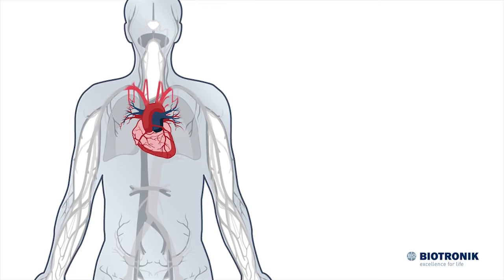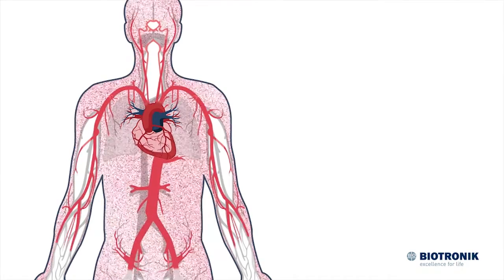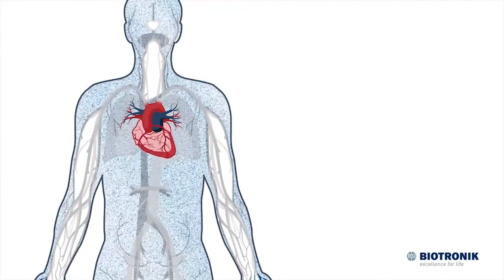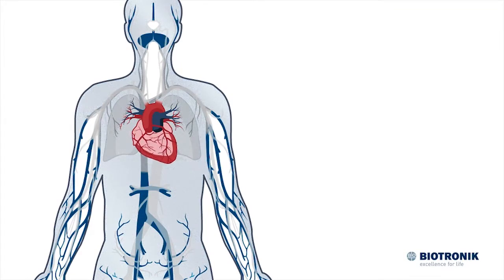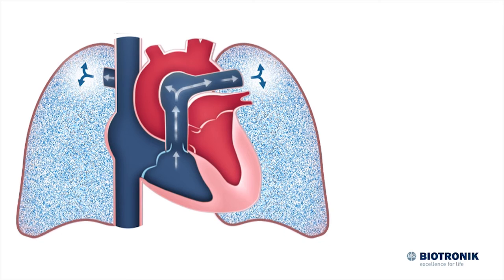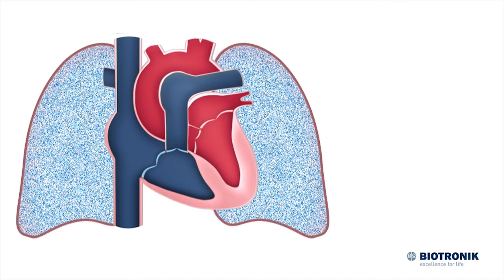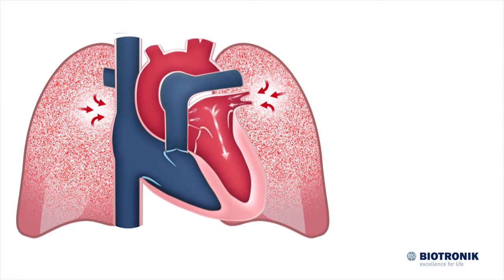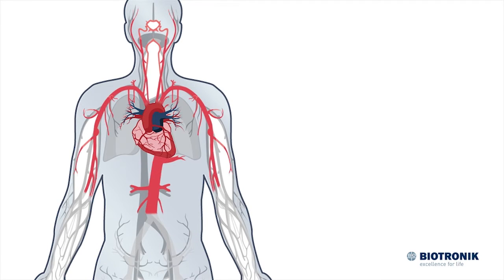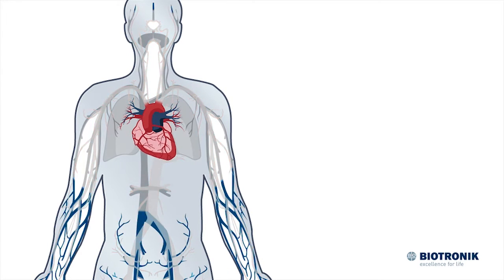The arteries carry oxygen-rich blood from the heart into the body, where the oxygen is transferred to the cells. The oxygen-poor blood is carried back to the heart by the veins. The heart pumps low oxygen blood from the veins into the lungs, where the blood is enriched with oxygen again. The oxygen-enriched blood is then carried back to the heart, which pumps it back into the body, and the cycle begins again.